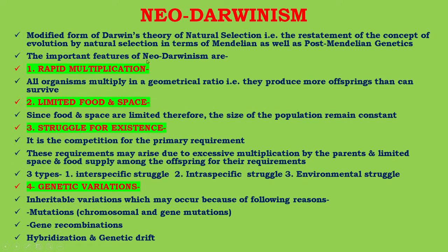The important features of Neo-Darwinism are: number one, rapid multiplication — all organisms multiply in a geometrical ratio, producing more offspring than can survive. Next is limited food and space — since food and space are limited, the size of the population remains constant.